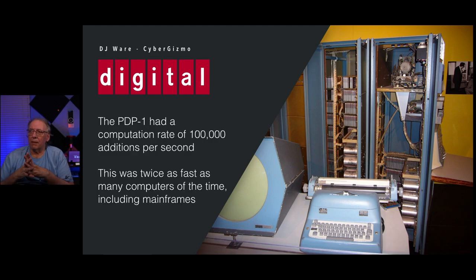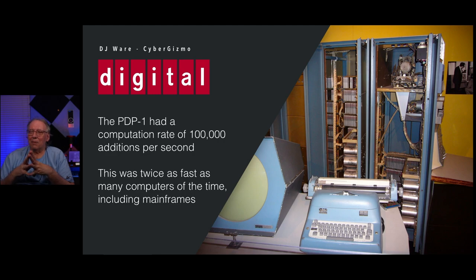It did have magnetic core memory and offered full parallel processing — quite advanced for its time. You're probably going to laugh, but a PDP-1 had a computation rate of about 100,000 additions per second. That doesn't quite hold up today, but it was twice as fast as many computers of the time, including mainframes.